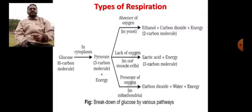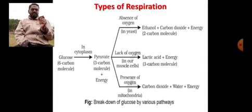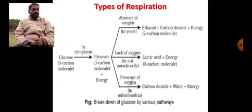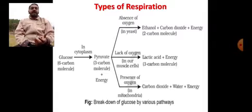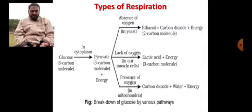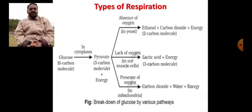When pyruvate is digested in the absence of oxygen — especially in yeast — there is produced ethanol, carbon dioxide, and release of energy. At the same time, the organism which can take oxygen for digestion of food but is in a lack-of-oxygen condition — that time what happens, especially in our muscles — because all the muscle cells are not 100% supplied with oxygen.